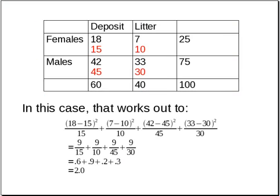In this case, it works out to: (18 minus 15) squared divided by 15, plus (7 minus 10) squared divided by 10, plus (42 minus 45) squared divided by 45, plus (33 minus 30) squared divided by 30. If we add all those up, we get a total chi-squared of 2.0.